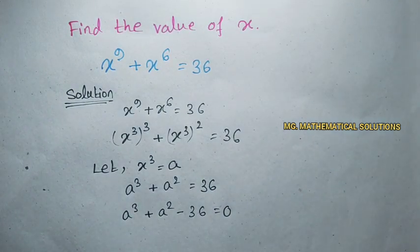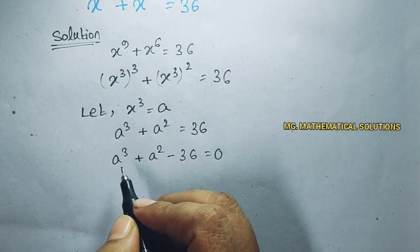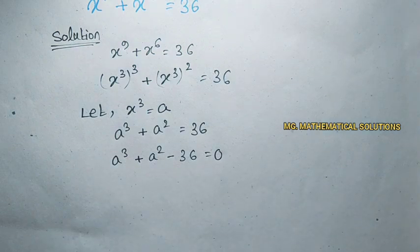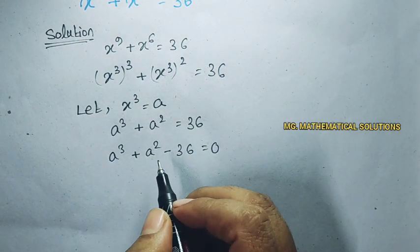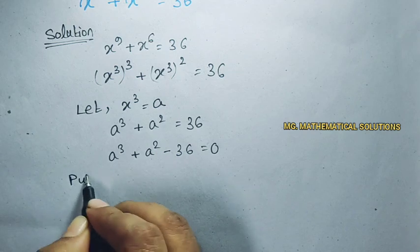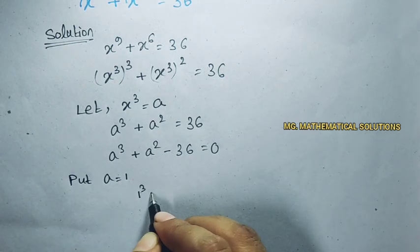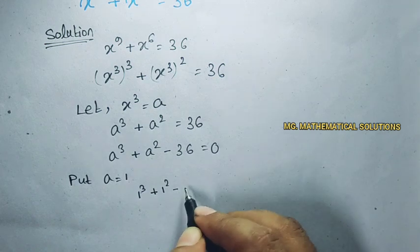Here we use the zero factor method to solve this problem. We put some value of a of this equation to see which value satisfies this equation. So put a equal to 1, 1 cube plus 1 square minus 36,